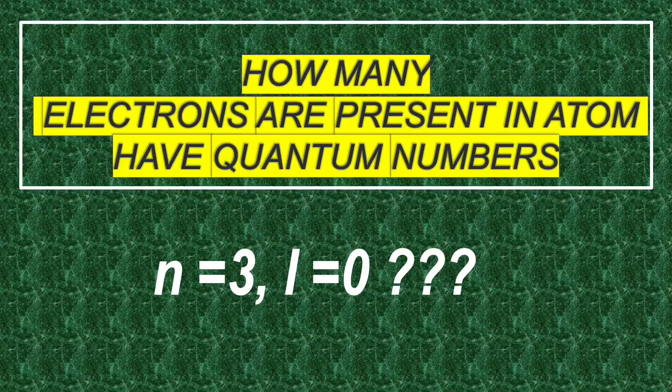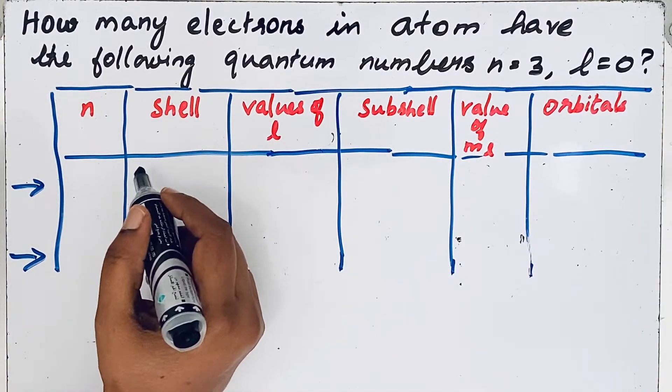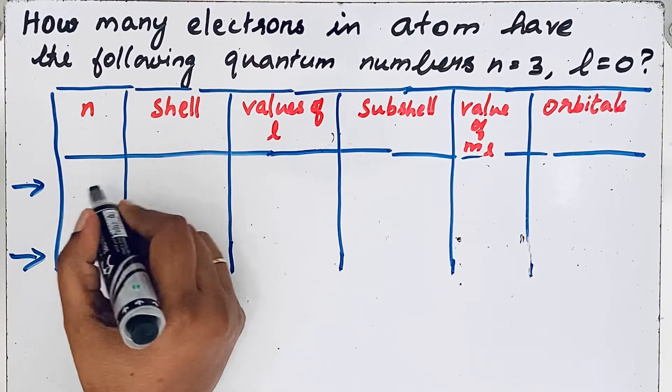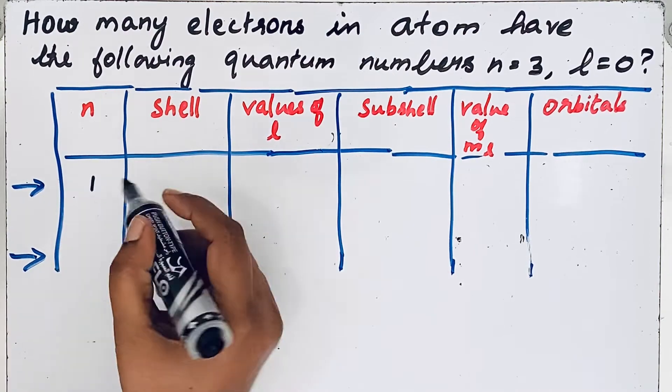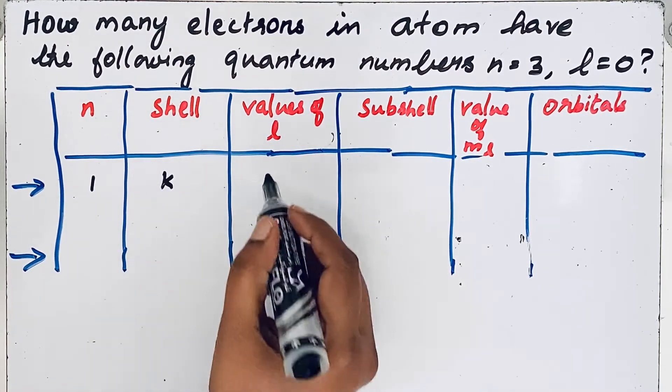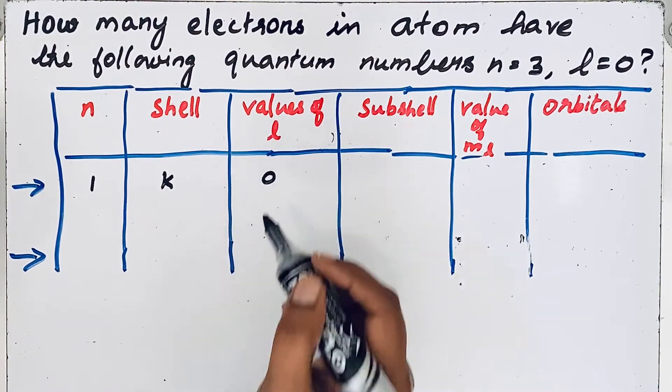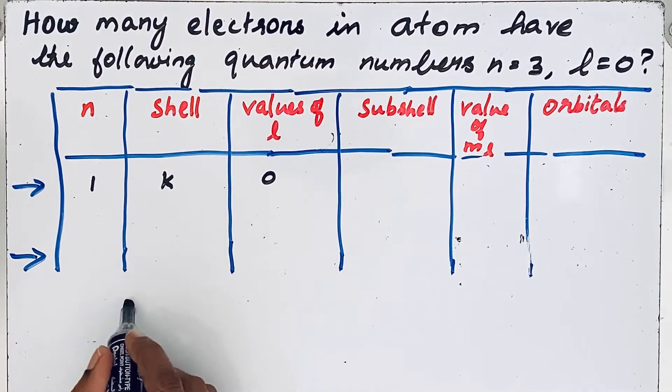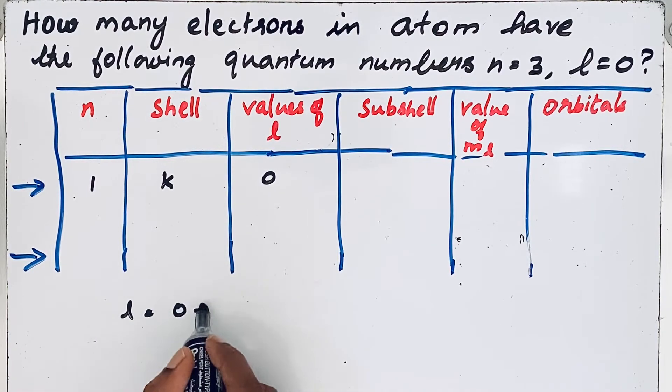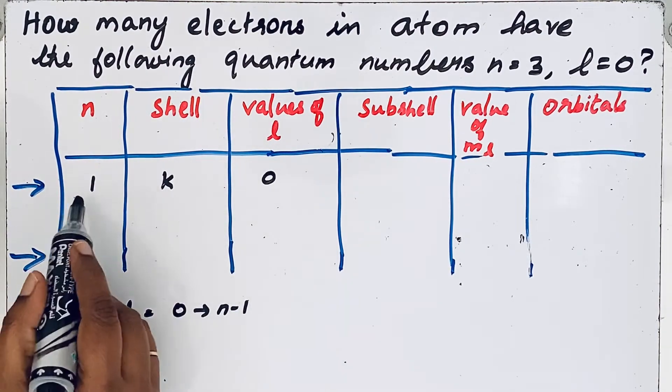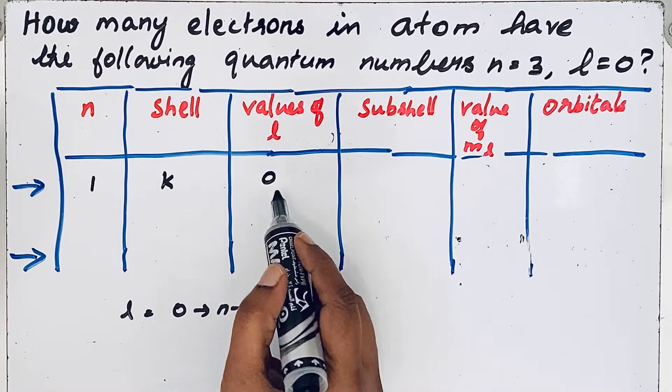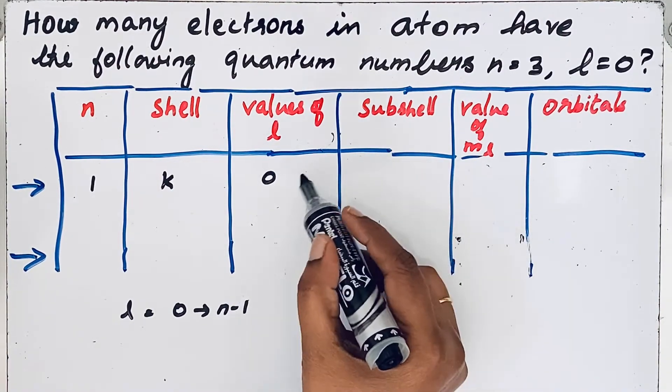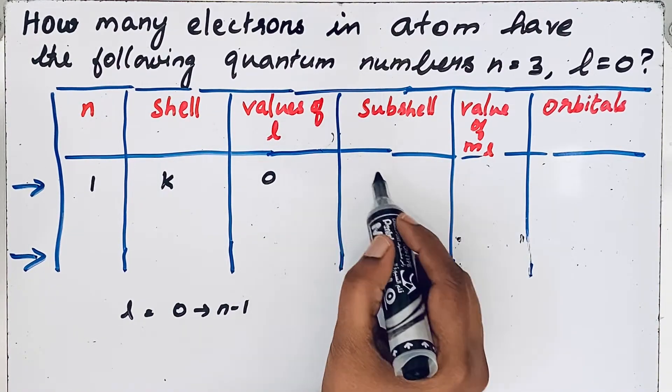First, let us start with n equals 1 for better understanding. If n equals 1, the shell is called K shell and the value of l equals 0, because for n values, l equals 0 to n minus 1. So here 1, so 1 minus 1 equals 0. Then subshell: if l equals 0, the subshell is s.